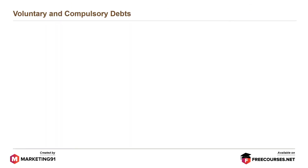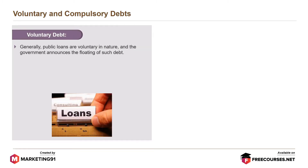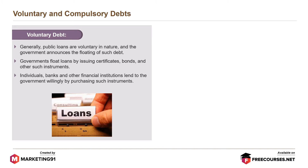Voluntary debt: Generally, public loans are voluntary in nature, and the government announces the floating of such debt. Governments float loans by issuing certificates, bonds, and other such instruments. Individuals, banks, and other financial institutions lend to the government willingly by purchasing such instruments.